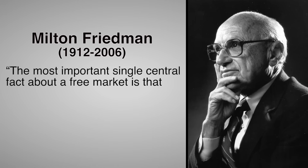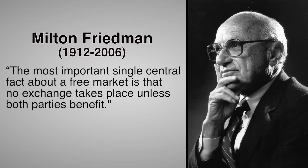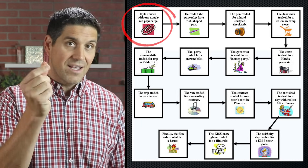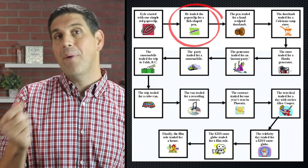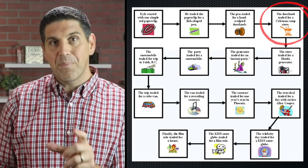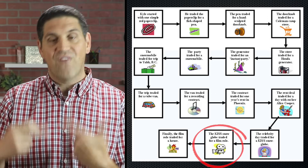The economist Milton Friedman said, 'The most important single central fact about a free market is that no exchange takes place unless both parties benefit.' And that's how Kyle ended up getting a house. He traded one single red paperclip for a pen, then traded the pen for a doorknob, the doorknob for a camping stove, so on and so on until he finally traded and got the house. Each person that traded with him did so willingly because they wanted the other product more than the product they were giving up.